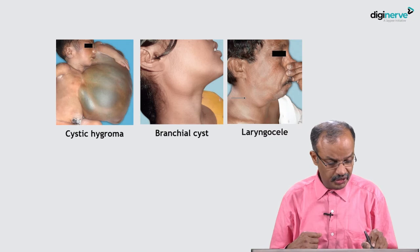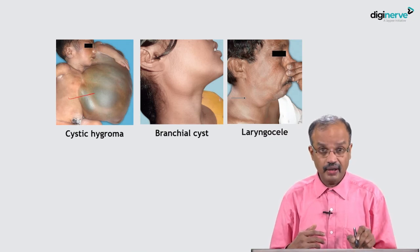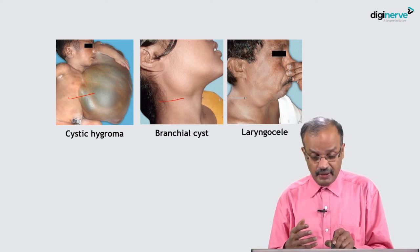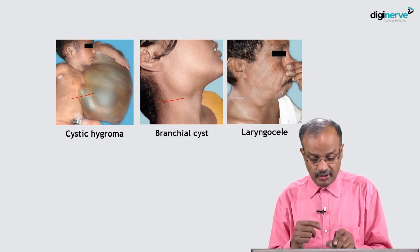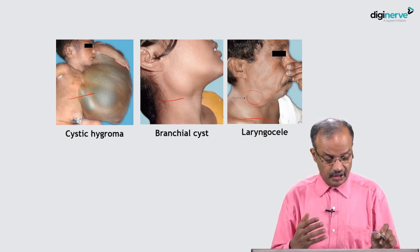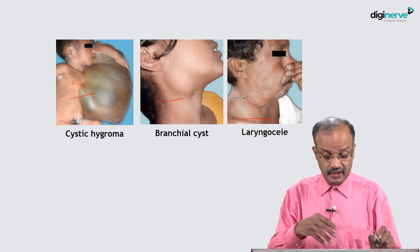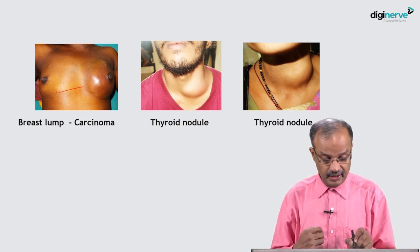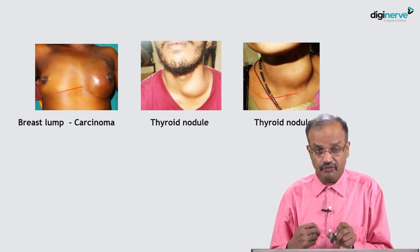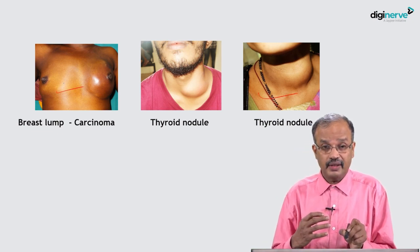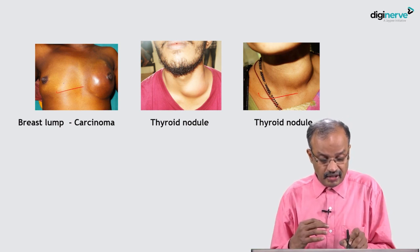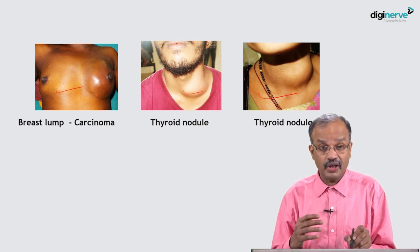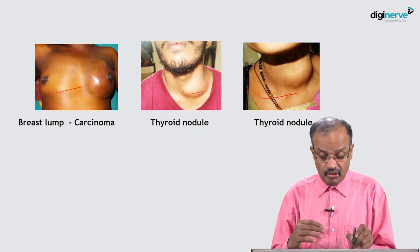Looking at the figures: cystic hygroma occurs in the newborn; branchial cyst is seen in adolescents around age 20; laryngeal swelling is seen in a trumpet blower in his 50s. Breast lump occurs in females. Thyroid nodules also commonly occur in females, but when they occur in males they are very significant — many thyroid nodules in males could be malignant, so you must be suspicious and give them real importance.